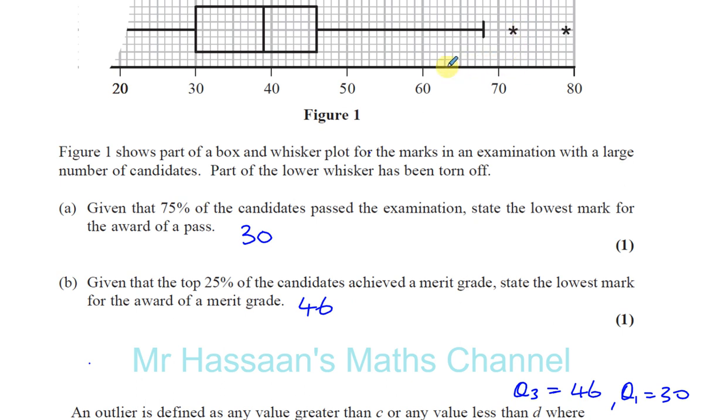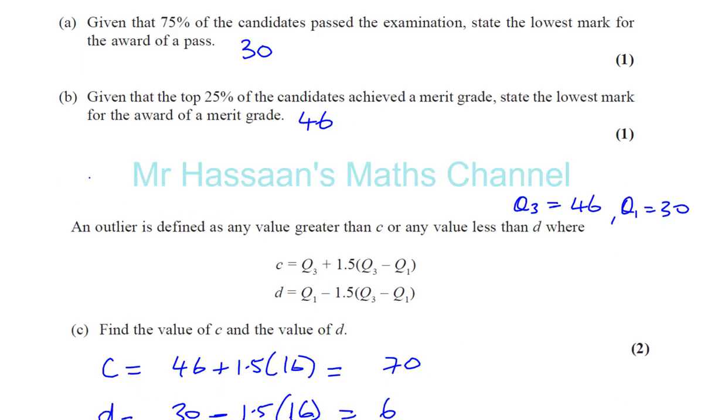So in this particular box and whisker plot, they've drawn the end of the whisker at the highest mark, which is within the range. You can see that that's actually a mark, that's going to be 68. So you've got 68, and 72, and 79. Those are the highest marks.